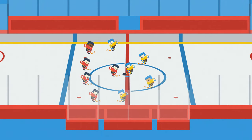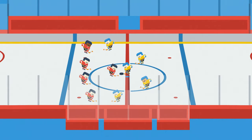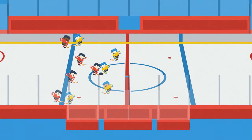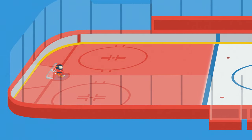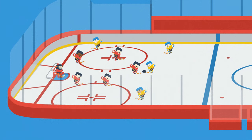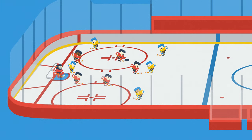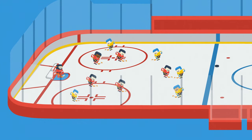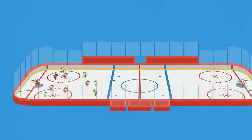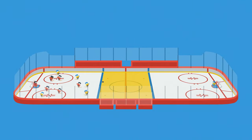If your team doesn't have the puck, you want to do everything you can to keep the other team from entering your zone. When you're playing in your own defensive zone, all you want to do is get the puck out — past the blue line, into the neutral zone or even the offensive zone.